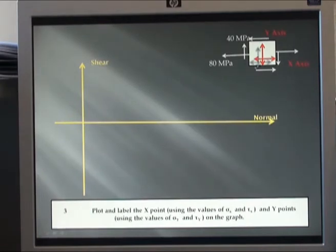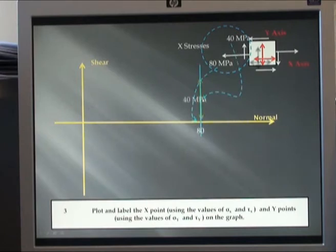First thing we need to do is plot our X and Y stresses. This stress acts in the X axis; we call it stress X. This stress acts on this face of my element, and so does that shear. We therefore gather those two and refer to this as stress X values—my normal stress and shear stress. I draw my normal stress on the axis, draw my shear stress vertically, and label that point X. Very important to label these points.